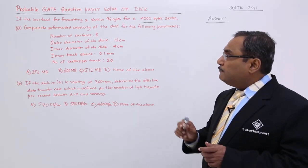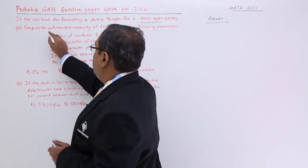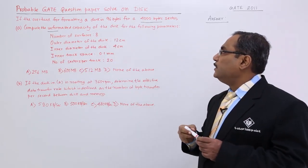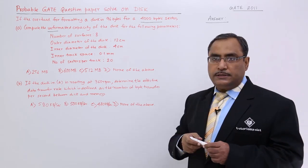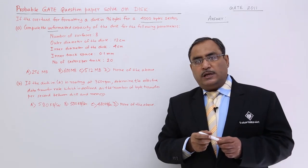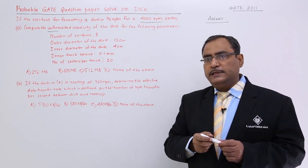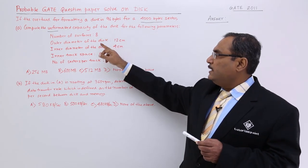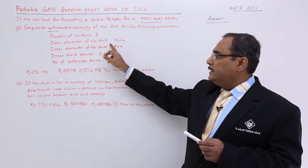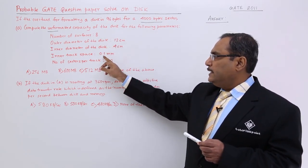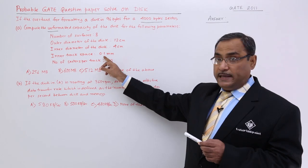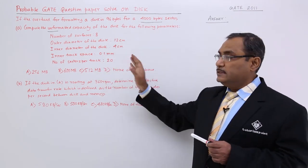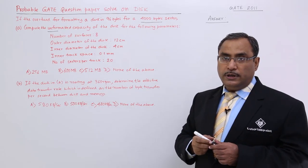Part A asks us to compute the unformatted capacity of the disk for the following parameters: number of surfaces, outer diameter of the disk, inner diameter of the disk, inner track space, and number of sectors per track.